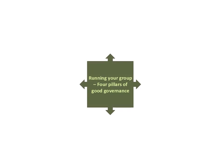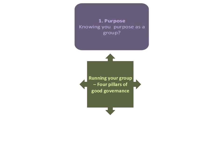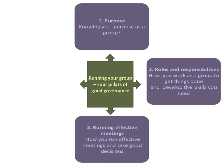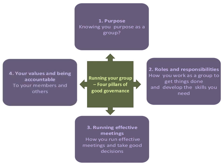It can be helpful to think of running your group in terms of four pillars of good governance, which are the focus of this module. Firstly, purpose — having a clear purpose and shared understanding of why your group exists. Secondly, having clear roles and responsibilities and the skills needed to carry these out. Thirdly, being able to run effective meetings, work well together, and take good decisions. And lastly, that your work is based on your values, the things you believe are important in how you carry out your work, and also that you're accountable to your members and able to take responsibility for the group's decisions and actions. All four of these areas are covered in more detail in this module.